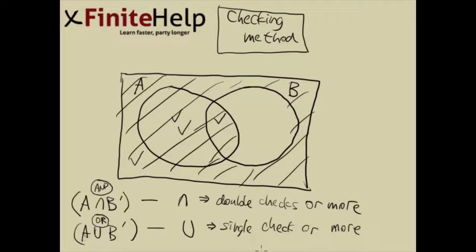And you can use this exact same thing to do three sets or more, even in a Venn diagram. Again, intersection is going to be double checks or more.